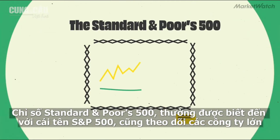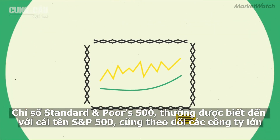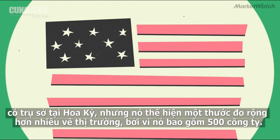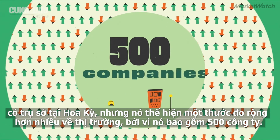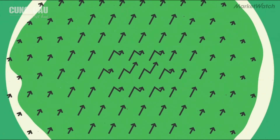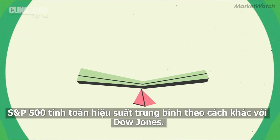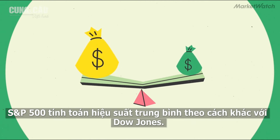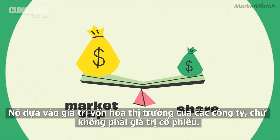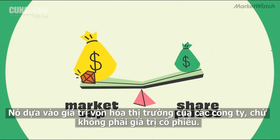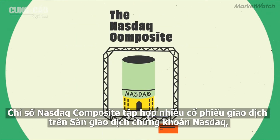The Standard & Poor's 500 index, better known as the S&P 500, also tracks large US-based companies, but it provides a much broader measure of the market because it includes 500 companies. The S&P also calculates average performance differently than the Dow — it gives greater weight to companies with larger market caps, not higher share prices.